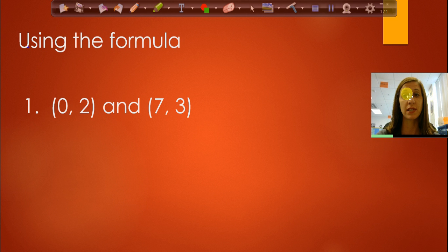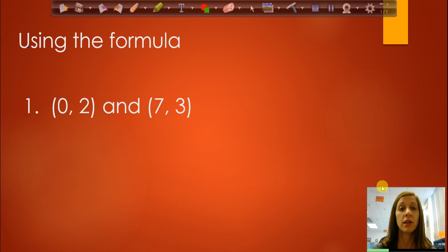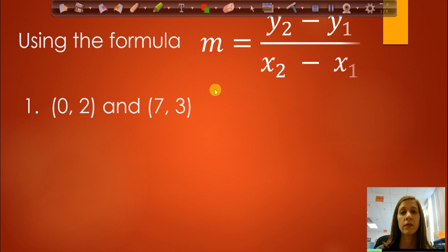So here's our first example. We're going to use the formula and the directions are going to say calculate the slope between these two points. So option one is you could always take graph paper, plot those two points and count your rise over run. That's a little time consuming. Once you start using the formula, it's very easy to calculate the slope. So here's our formula. So you are given two ordered pairs.